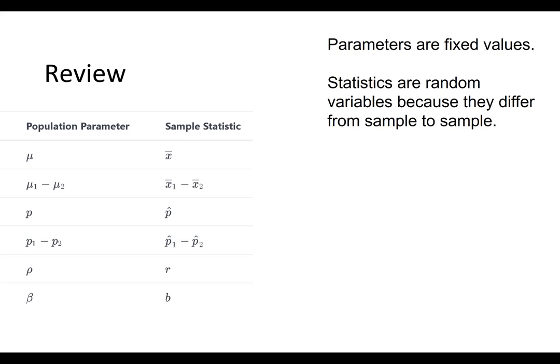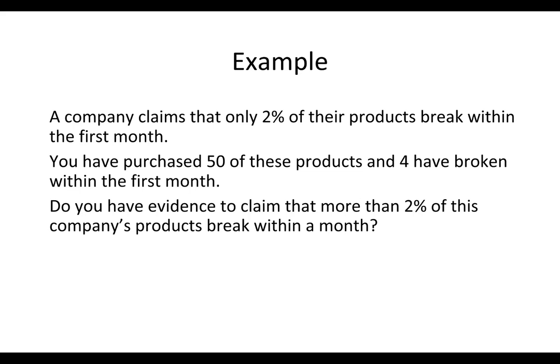Let's look at an example of a scenario where we could apply hypothesis testing. A company claims that only 2% of their products break within the first month. You have purchased 50 of these products and 4 have broken within the first month. Do you have evidence to claim that more than 2% of this company's products break within a month? We can find the probability that a population where p equals 0.02 would produce a sample of 50 products with 4 or more that break within a month. We'll walk through this example throughout this video.